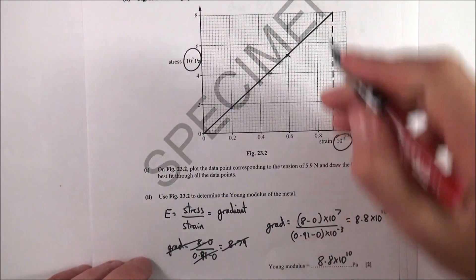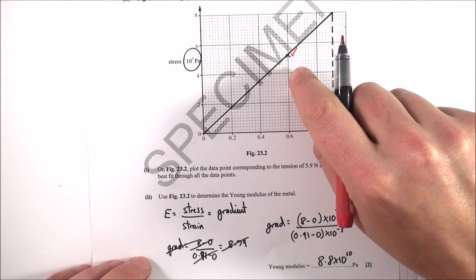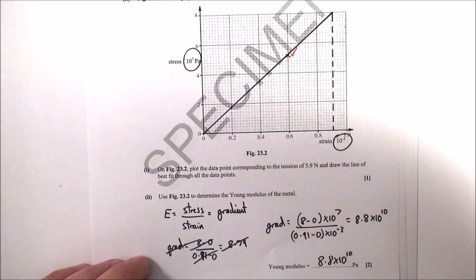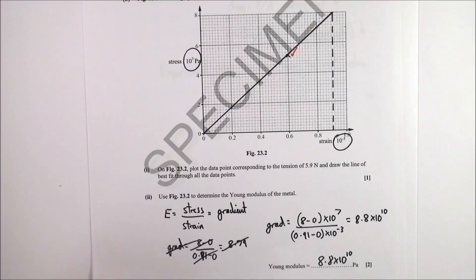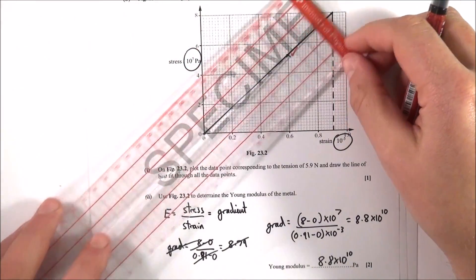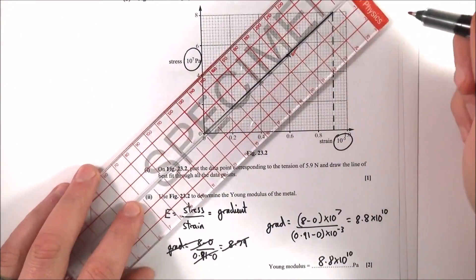Secondly, draw the data point corresponding to this value, which I did over here, within half a small square. Easy marks to gain. Then draw the line of best fit through all the data points. I got my ruler, put it on here, and drew my line of best fit. That's an easy one mark.